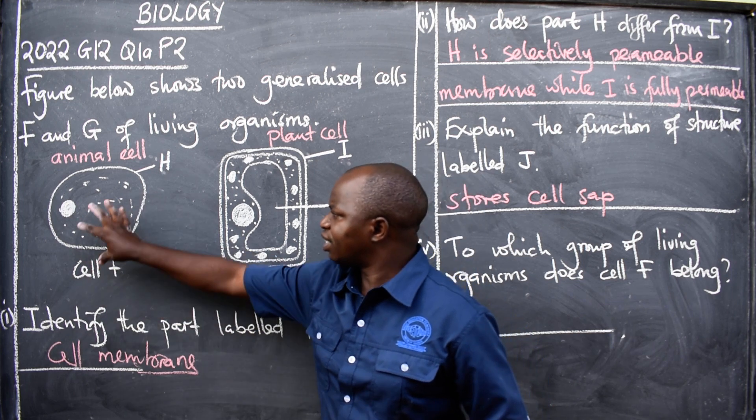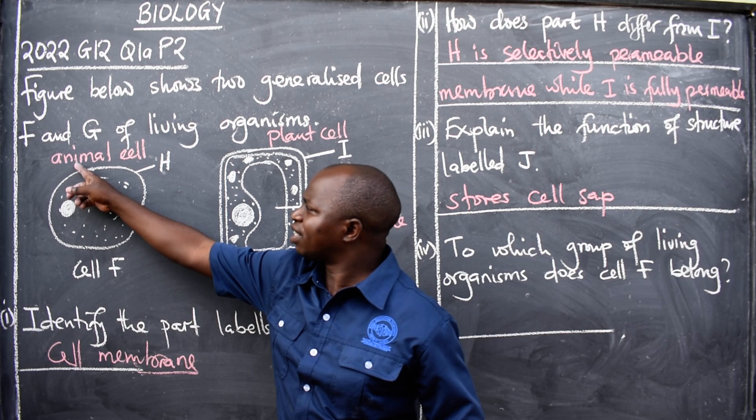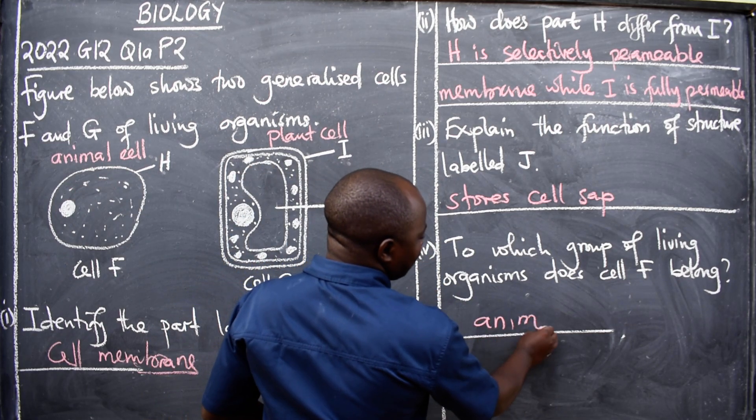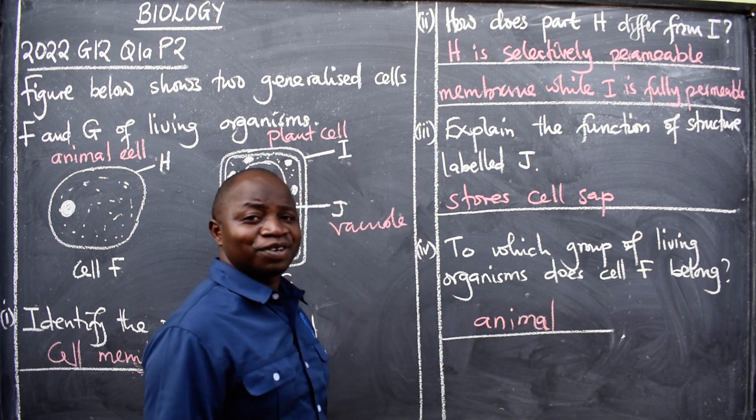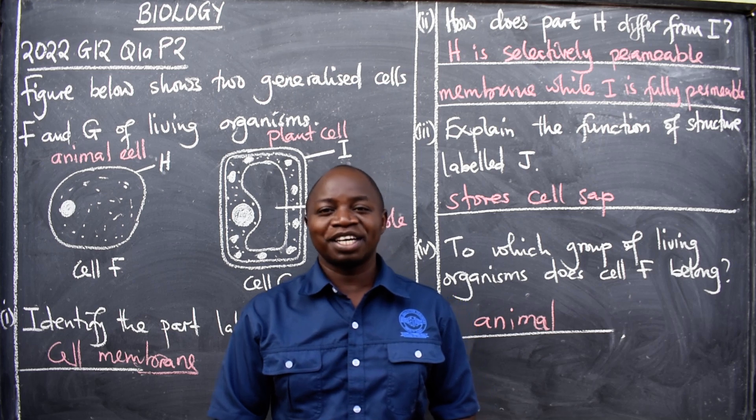To which group of living organisms does cell F belong? Cell F is this one, I've already written the answers. It belongs to animals. So here you say animal. Did you get the questions? If you did, wonderful.